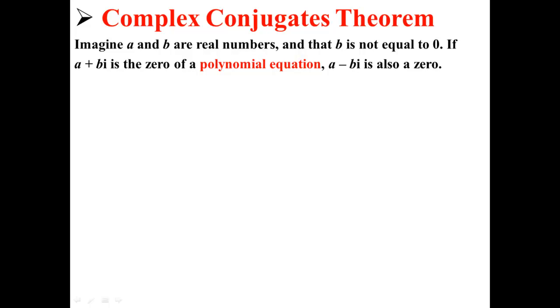Imagine that a and b are real numbers and that b is not equal to zero. If a plus bi is the zero of a polynomial equation, a minus bi is also a zero. This is the Complex Conjugates Theorem.